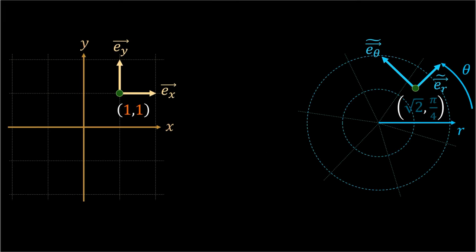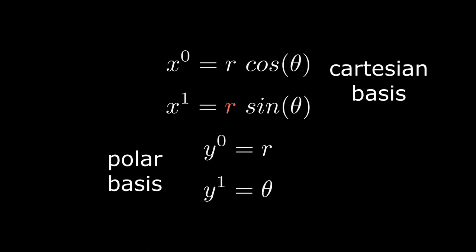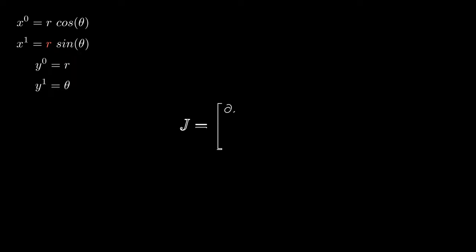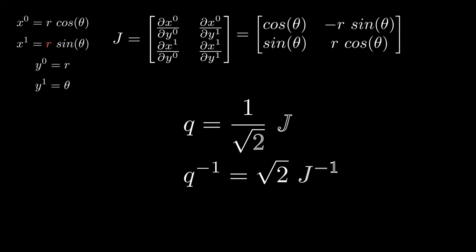Time for some example. Let's say we're talking about a simple two-dimensional case. A transformation rule or a Jacobian will be this matrix. But the tetrad will be this. So it could have been the same as Jacobian, but we have an additional factor as we defined above.